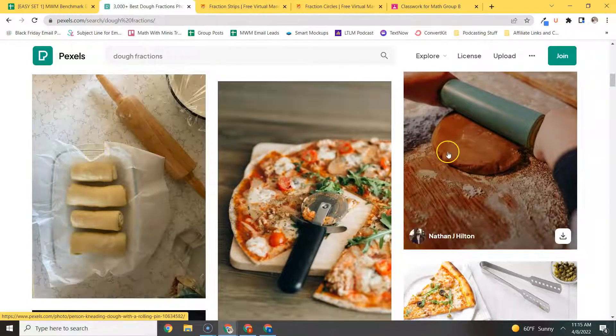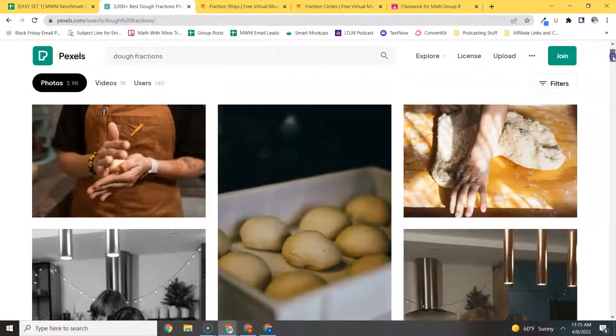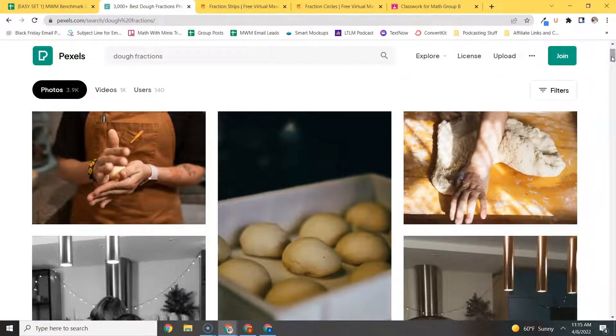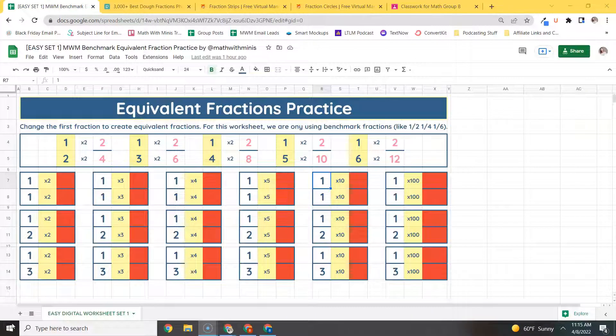But also even just having a pizza and splitting it up. You can also get some play-doh and do the same thing. Take a batch of play-doh and split it up into four or eight pieces. Really, really easy to do that, and it really drives the point home of what fractions are when you start with one whole batch.